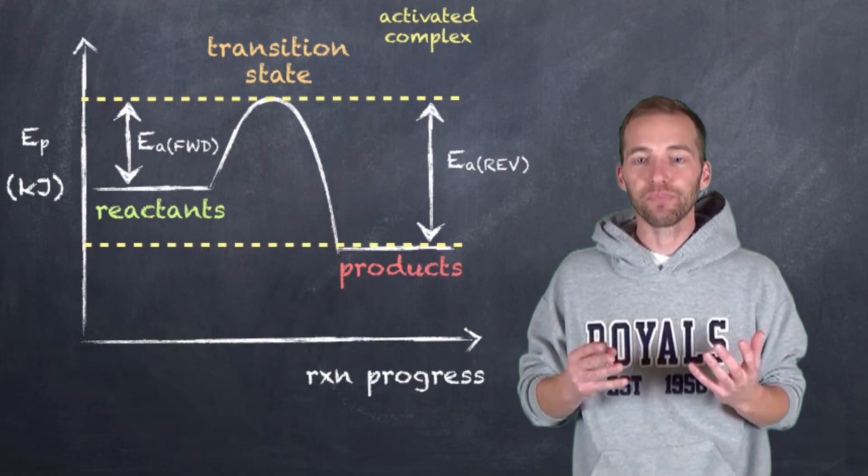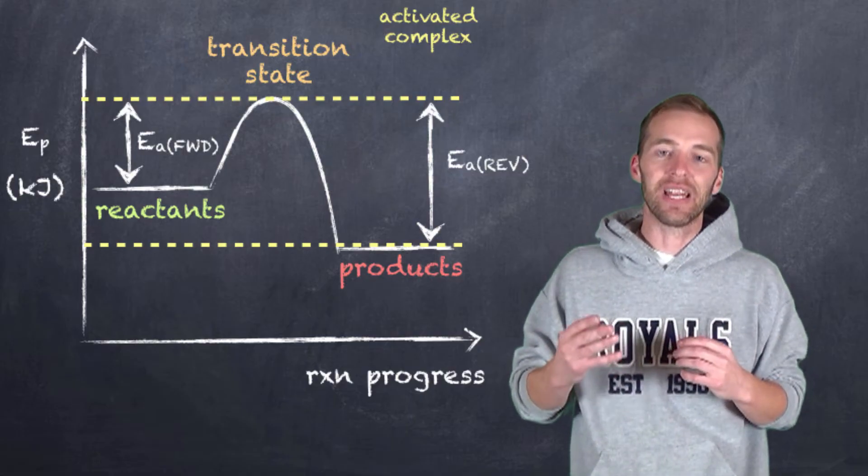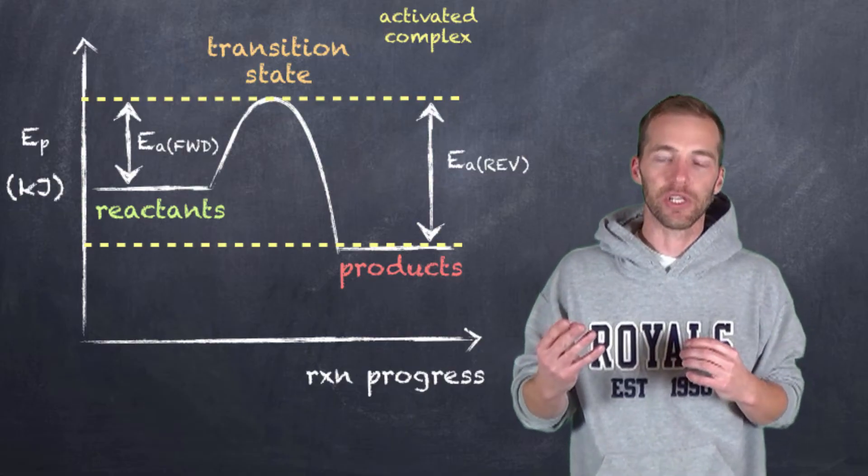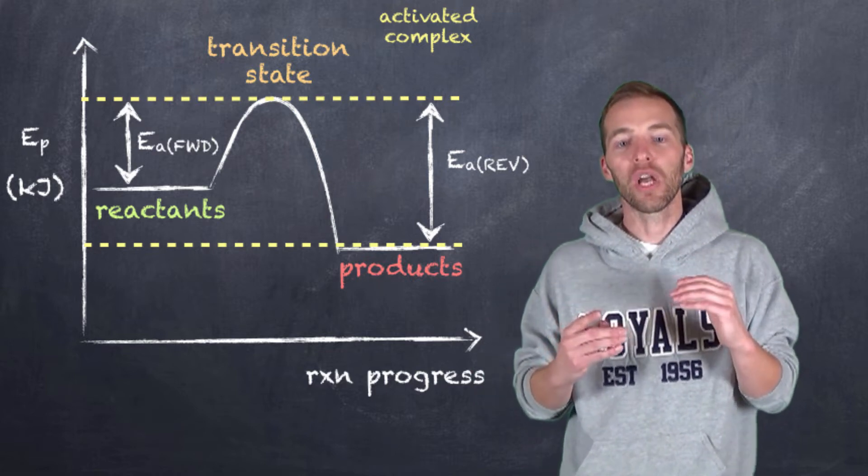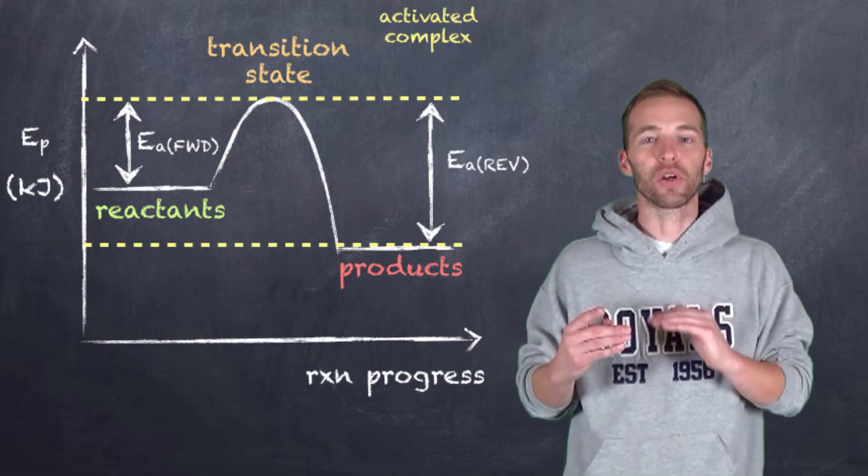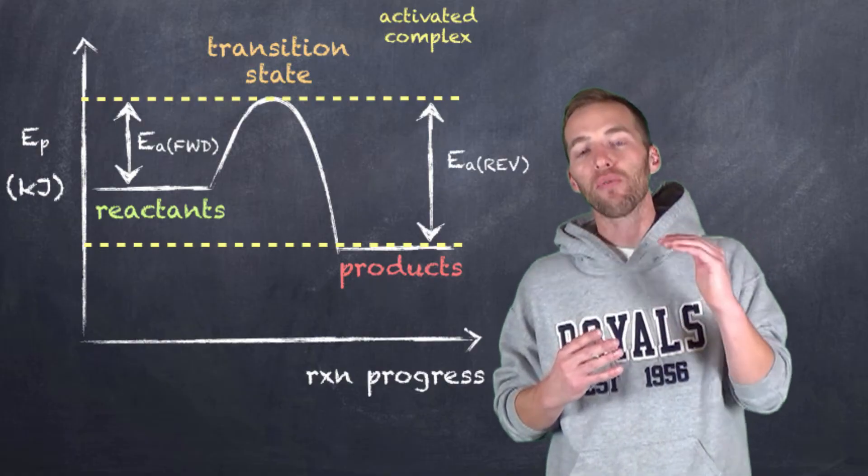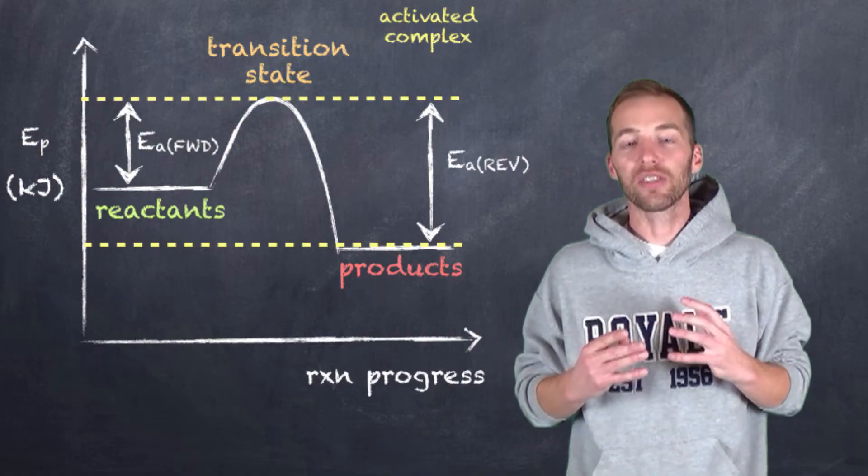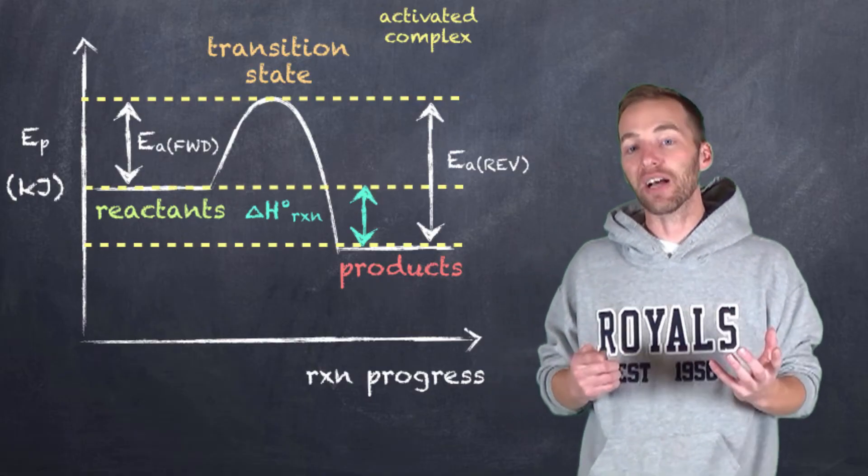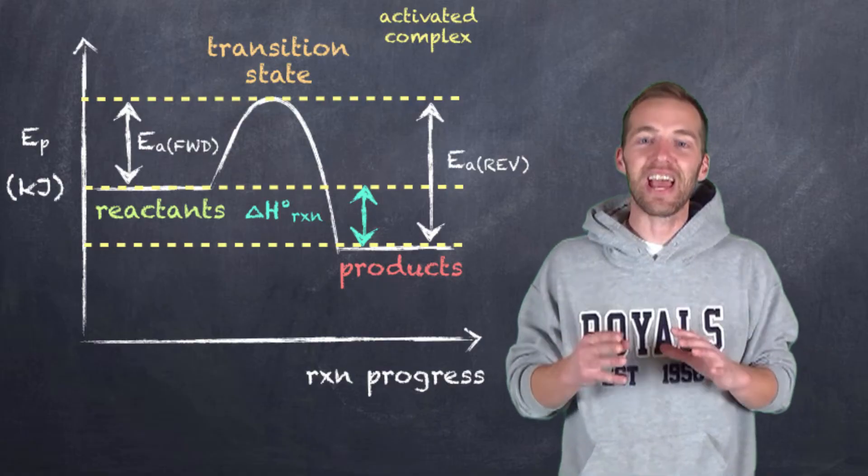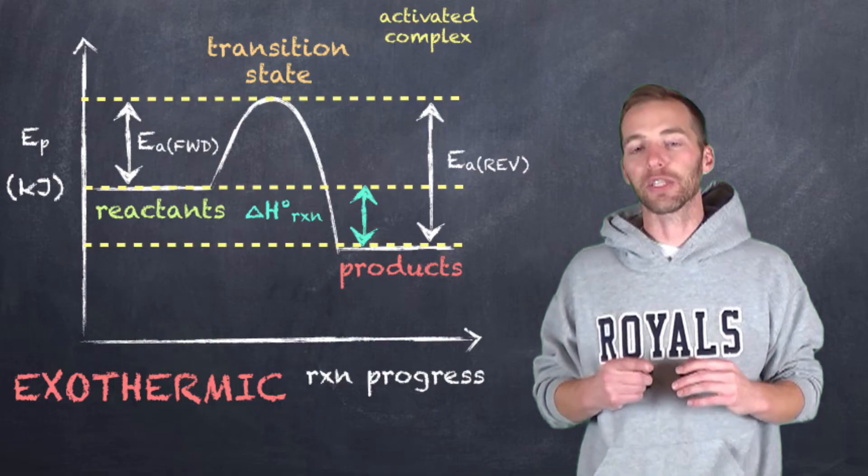Now, in this particular example, we have the forward activation energy being less than the reverse activation energy. Now, what this means to us is if we take a look at the difference between reactants and products, notice that we have reactants that are greater than the products in terms of the energy. So, as this reaction proceeds, the overall net change from reactants to products is going to be negative. That is, we're going to lose energy to our surroundings. And as we know, we refer to this as an exothermic reaction. So, this is what a potential energy diagram would look like for an exothermic reaction.